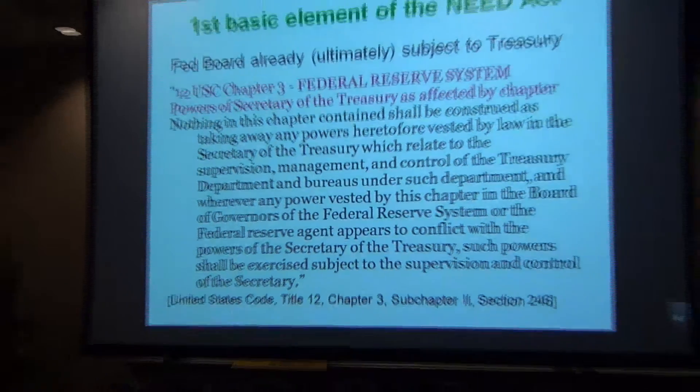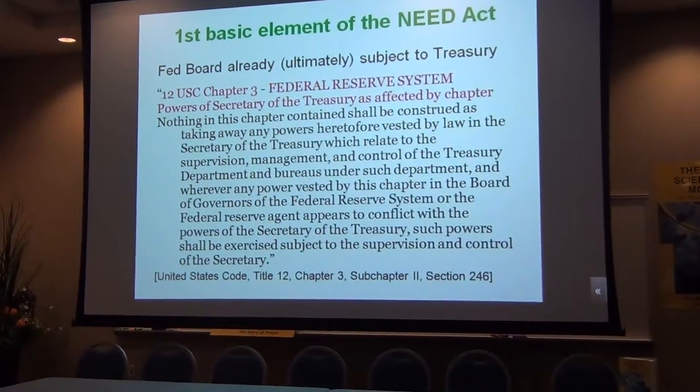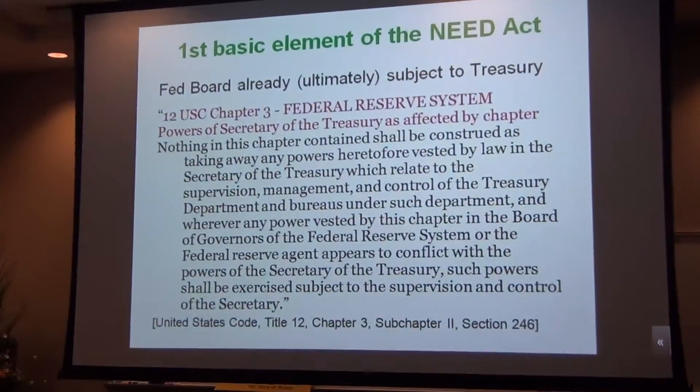The first basic element: the Fed moves into the Treasury. The US Mint makes coins and the Bureau of Engraving and Printing makes currency — they're already in the Treasury. What's happening is the electronic part of the money supply, which is most of it, goes into the Treasury as well, under the same roof. So you've got three different bureaus under the same roof rather than one being an outlier. And under current law the Fed is already under the Secretary of the Treasury — if there's a dispute, the Secretary's word is final. So it's conserving what already exists in the legal structures.